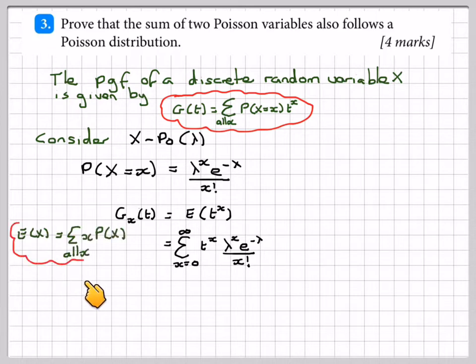Now E(t^X) is for all x, x times the probability of x, so we're using this idea here. So it's going to give me e to the minus lambda, which is the common factor that can come out from x equals 0 to infinity. Now this is t to the x times lambda to the x, so that will become (t times lambda) to the x over x factorial.